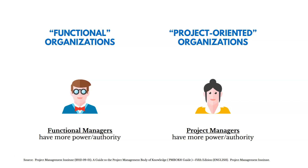In organizations, we really have two ends of a spectrum — two different types of organizational structures. On one end, you have functional organizations where functional managers have more power and authority. Those could be the head of accounting, head of marketing, the vice president of construction. On the other end, you have project-oriented organizations where project managers have more power and authority. In a functional organization, getting the resources and budget required to get the work done is probably going to be a little bit more challenging.